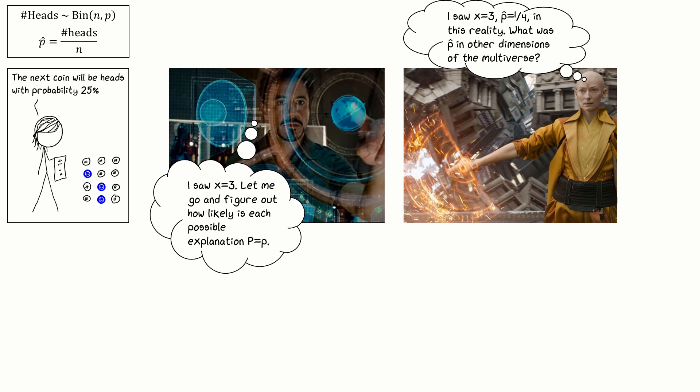Much better to look across the entire multiverse, look at the spread of p hat values found by parallel data scientists in parallel universes, and use this spread of values to measure our uncertainty in p hat.